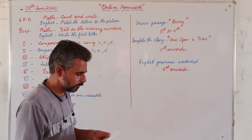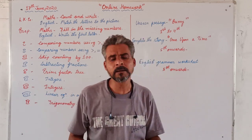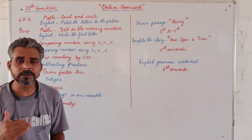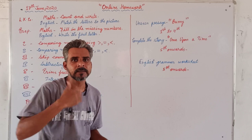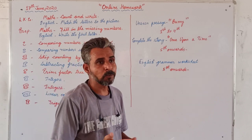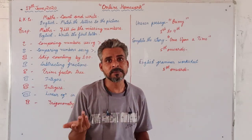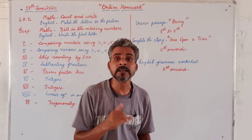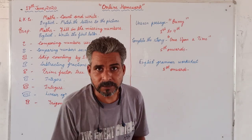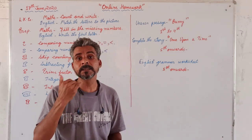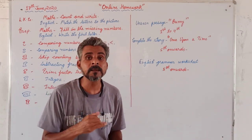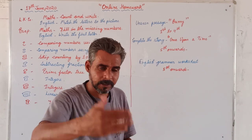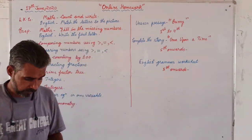For third class, the worksheet is based on skip counting by 100. Skip counting means you add 100 each time. Suppose you start with 235 — the next number is 235 plus 100, which is 335; then 435, and so on. You have to complete the sequence by adding 100 each step.